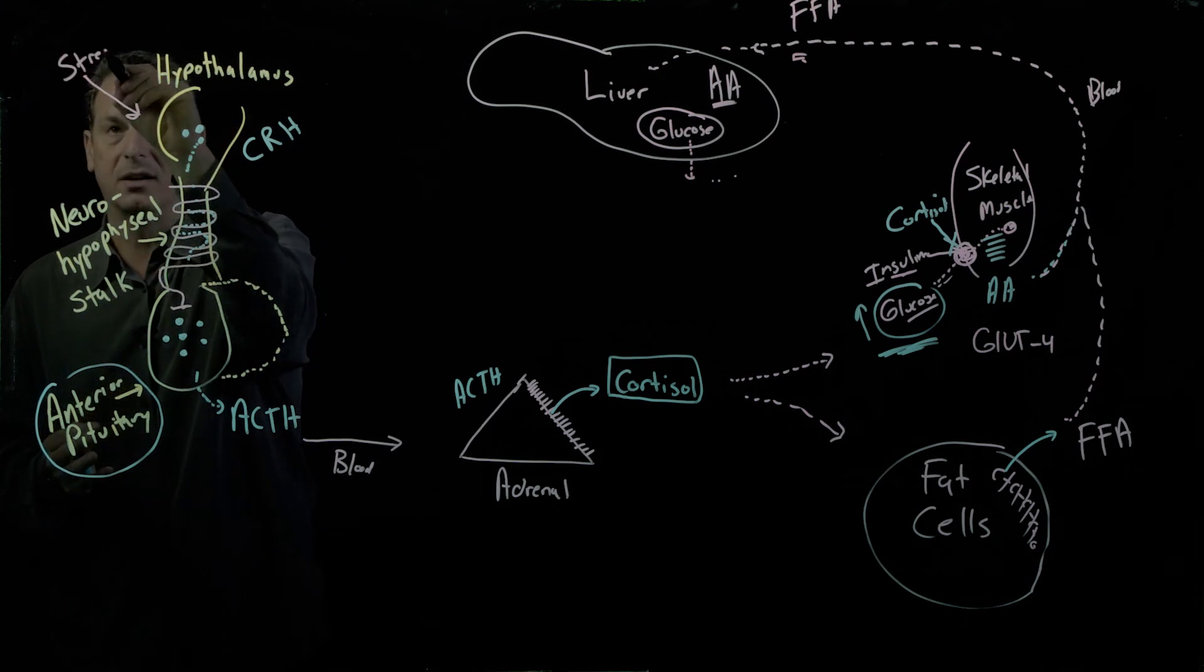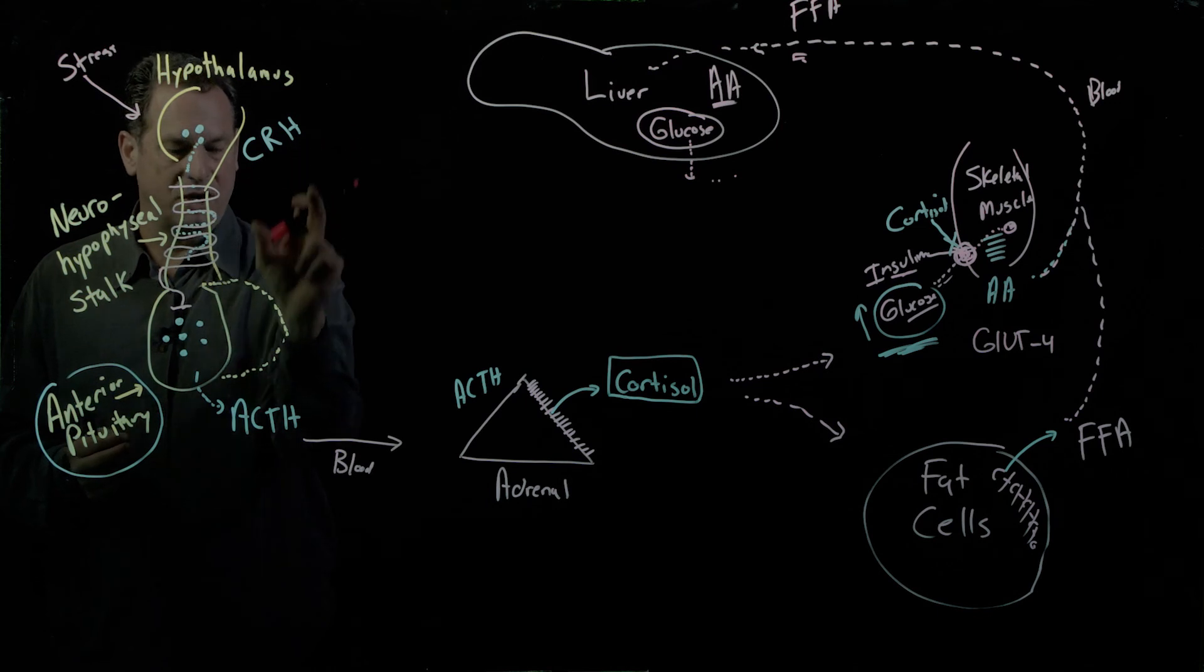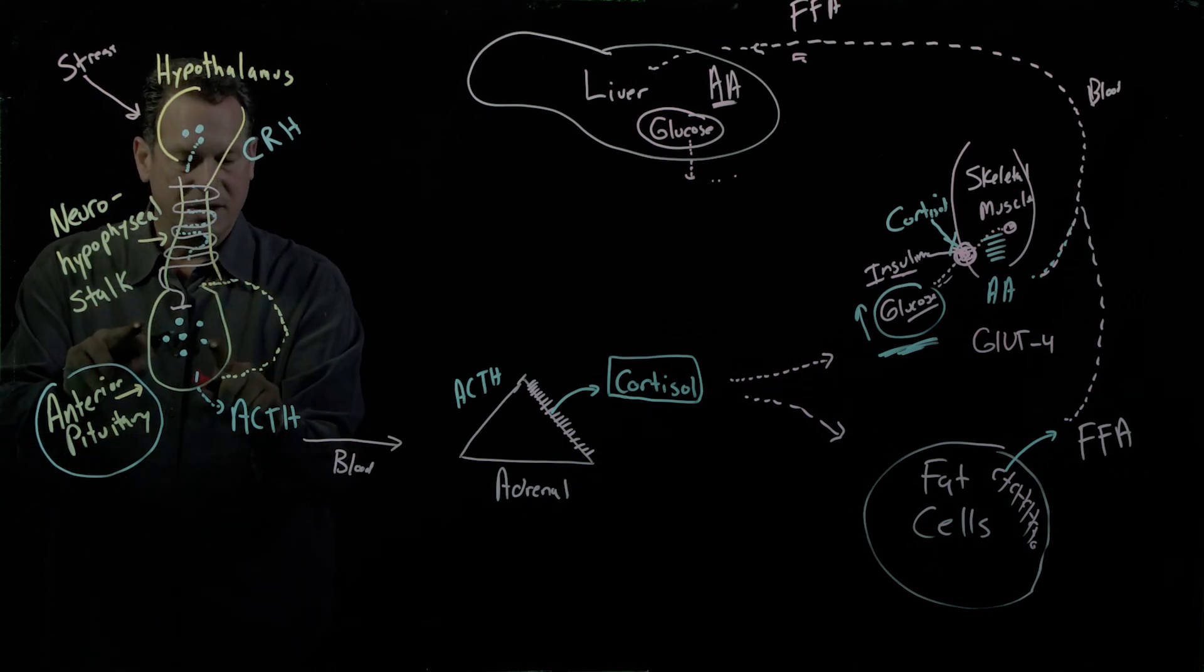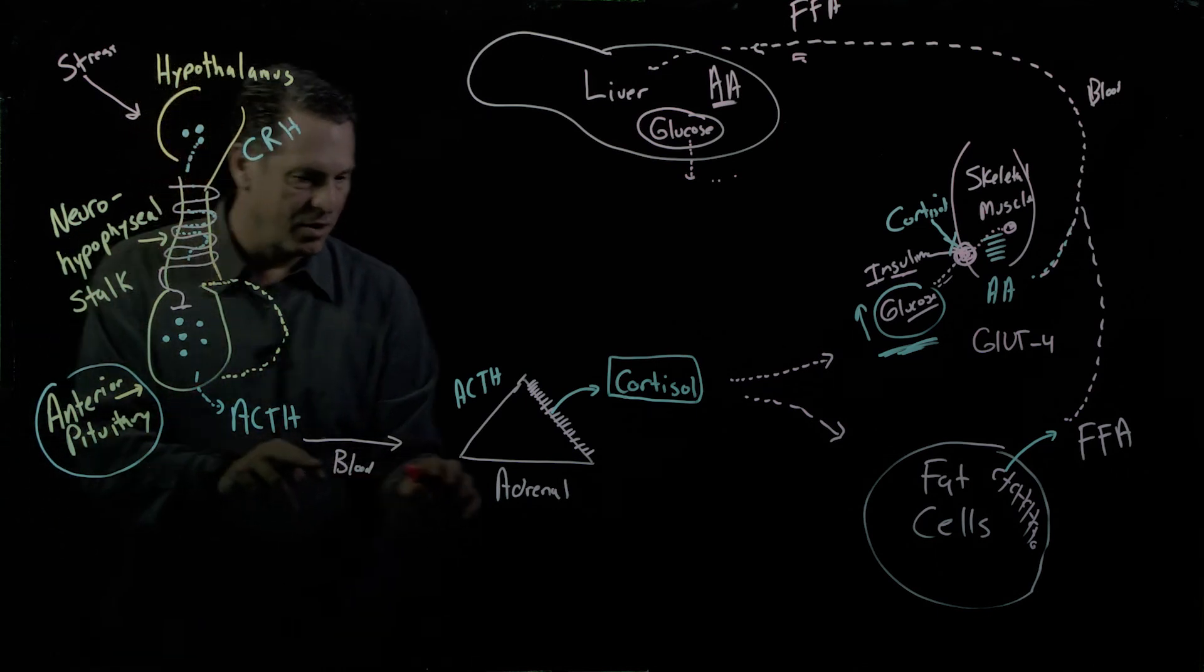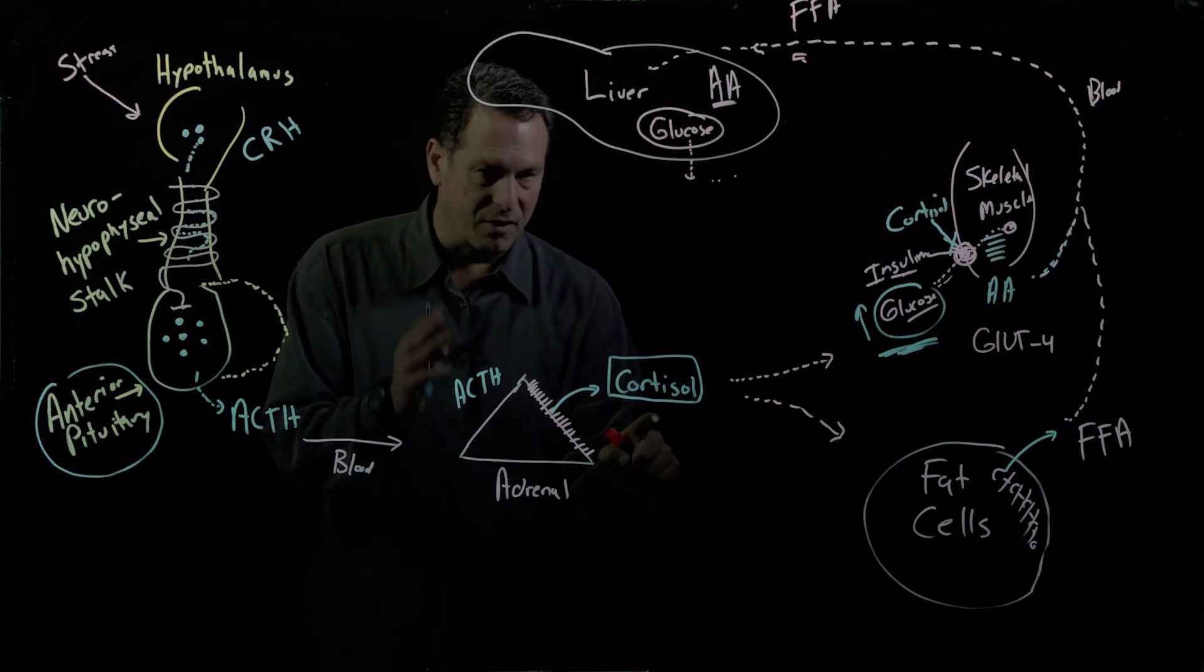stress then causes hypothalamus to secrete CRH, stimulates ACTH, flows to the blood, goes to the adrenal gland, makes cortisol from cholesterol.